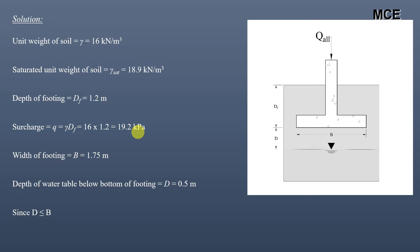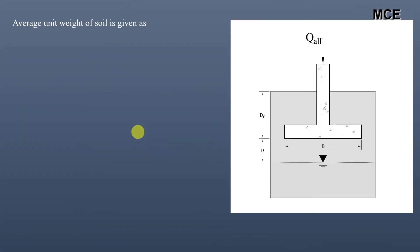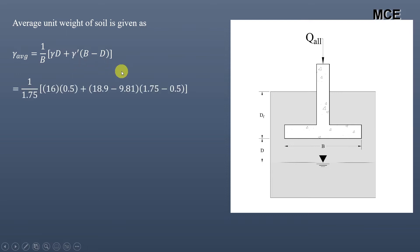The depth of water table below the bottom of the footing (0.5 m) is less than the width of the footing (1.75 m), so we compute the average unit weight: γ_avg = (1/B) × [γ × D + γ' × (B − D)], where γ' is the submerged unit weight. Substituting: γ_avg = (1/1.75) × [16 × 0.5 + (18.9 − 9.8) × (1.75 − 0.5)] = 11.06 kN/m³. This value is used in the third term of Terzaghi's bearing capacity equation.